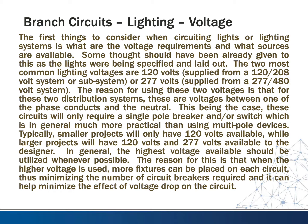The first thing to consider when circuiting lights is the voltage requirements and available sources. The two most common lighting voltages are 120 volts, typically supplied from a 120/208 system, or 277 volts, supplied from a 277/480 system. These voltages exist between one phase conductor and the neutral, meaning these circuits only require a single-pole breaker and/or switch, which is much more practical than using multiple-pole devices.